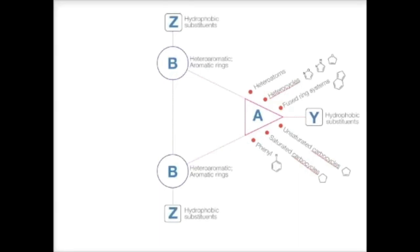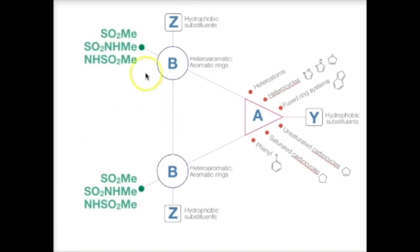B can be further linked to hydrophobic substituents and further linked to sulfonamide moieties. So that's essentially the essence of COX-2 inhibitors.